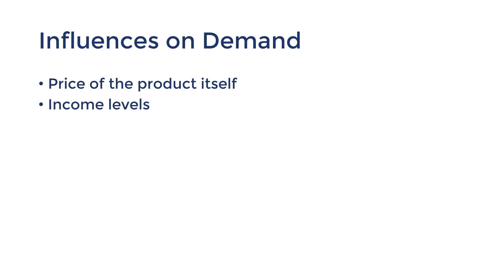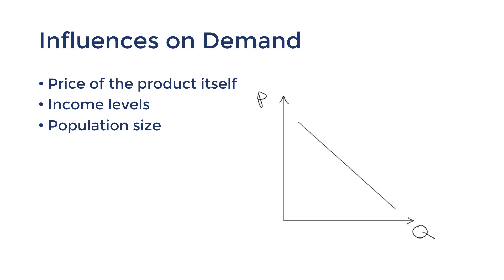Another influence related to this is population size. Because there will be more buyers willing and able to purchase the product, an increase in population size will cause an increase in demand, shifting it to the right. This means that even if you kept the product at the same price, quantity demanded will increase.